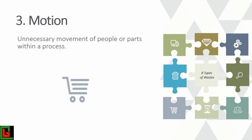Transportation is movement of material, whereas motion is the movement of the person or operator. For example, if an operator has to stretch and bend to pick an item every time they process a part, that's motion waste. It may take only a second, but when done thousands of times daily it adds up significantly.